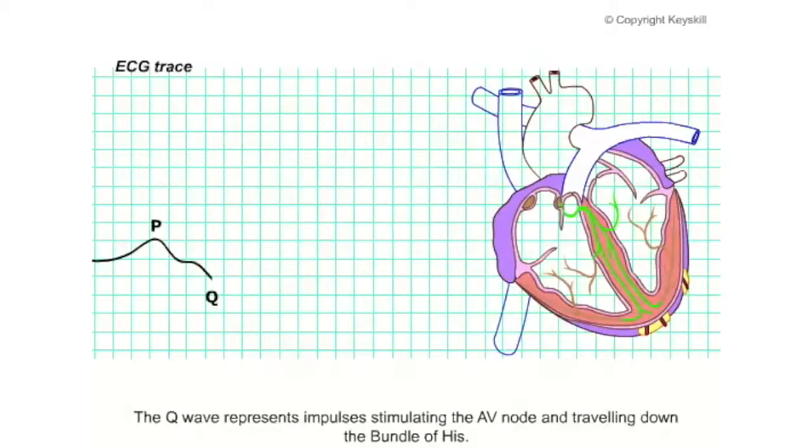The Q wave represents impulses stimulating the AV node and traveling down the Bundle of His.